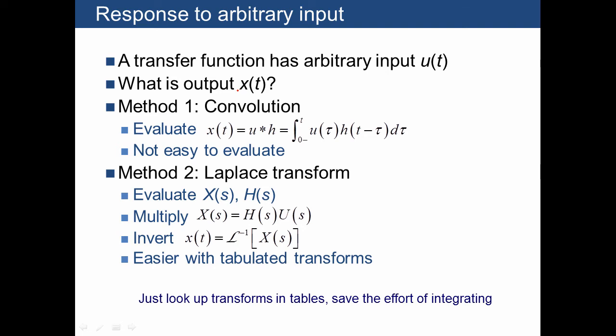One way to evaluate the response x of t for that arbitrary input is what we call the convolution integral. It's an integral where you multiply u by h where we have a dummy variable tau that's actually shifted relative to the normal time. This is a very difficult integral to evaluate, and we generally want to avoid doing that if at all possible.